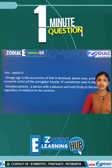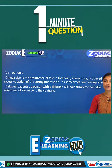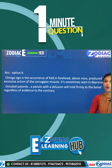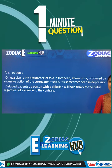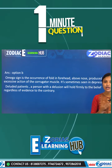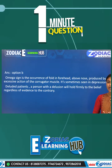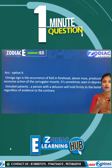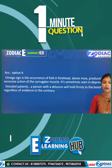Omega sign is the occurrence of a fold in the forehead above the nose, produced by excessive action of the corrugator muscle. Because of the excessive action of the corrugator muscles near the nose and forehead, the fold formed is called the Omega sign.